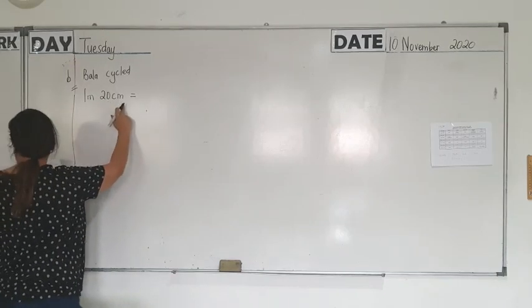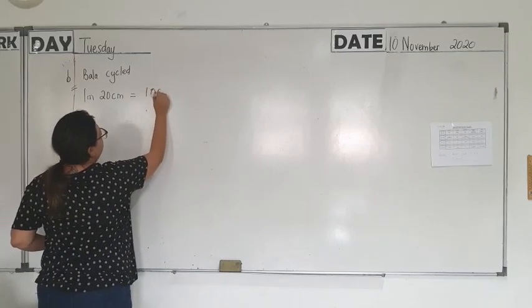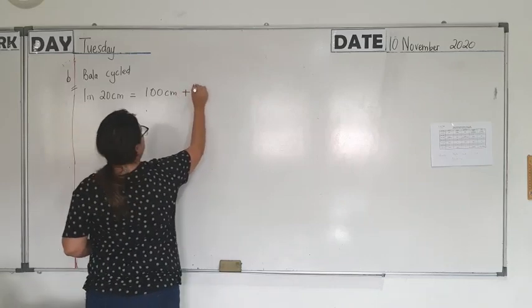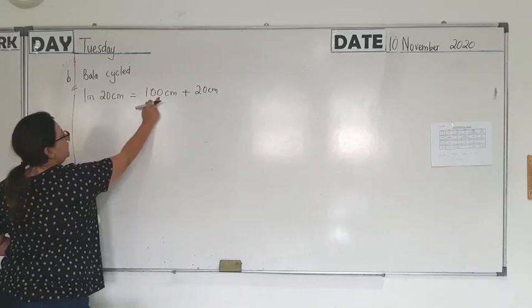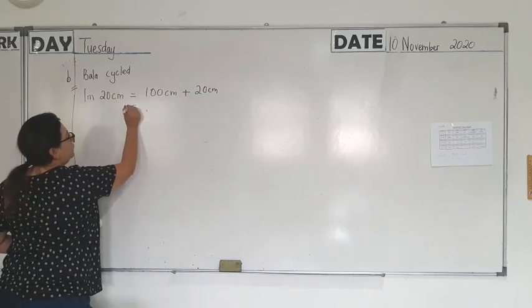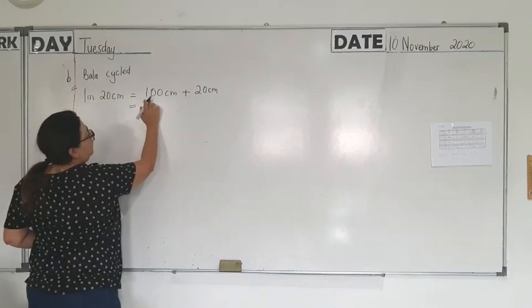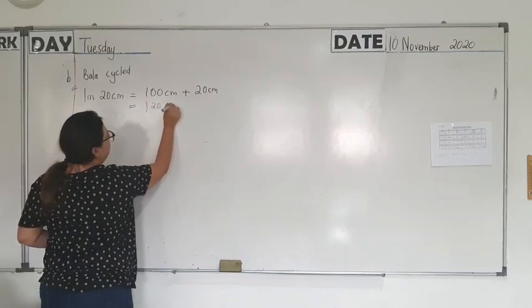So 1 in 1 box. What is 1 meter equal to? 100 cm plus 20 cm. So this I am changing to cm. Now make sure the equal to sign is below the equal to sign. So 100 plus 20 is 120 cm.